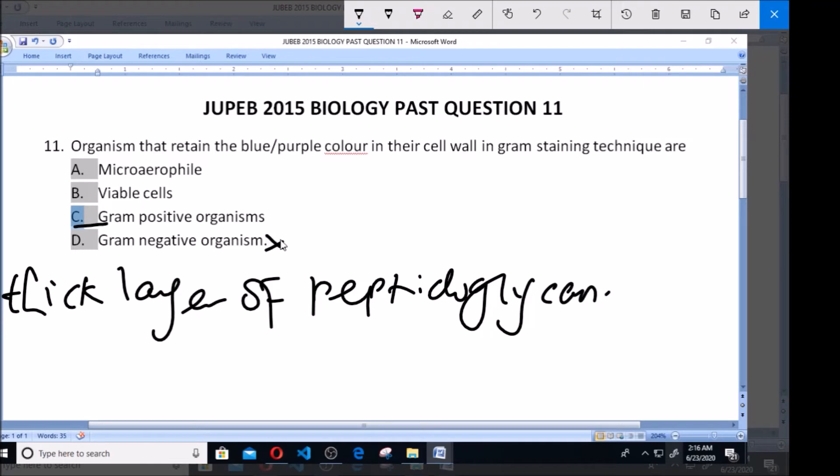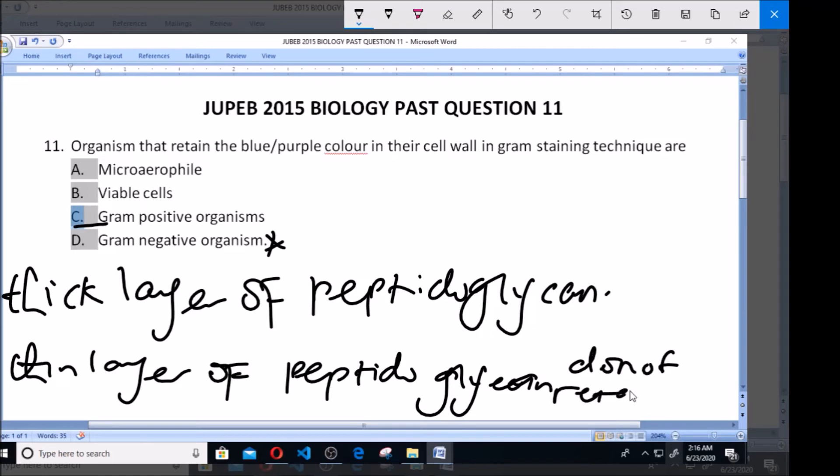Gram-negative on the other hand have thin layers of peptidoglycan. That's what makes it not to retain the blue-purple color.